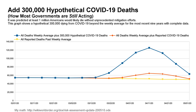It was predicted that at least 1 million Americans would likely die without unprecedented mitigation efforts. So this graph shows a hypothetical 300,000 dying from COVID-19 beyond the weekly averages for the most recent nine years with complete data. The dark blue line in this graph shows 300,000 deaths from COVID-19 during the same time period, compared to the orange line which shows what was observed, each stacked on top of the historical average in yellow.